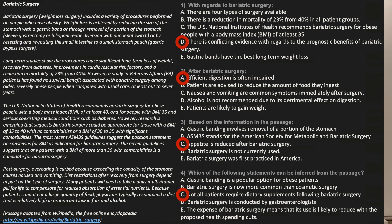For question 1, the correct answer is D: there is conflicting evidence with regards to the prognostic benefits of bariatric surgery. D is supported by the differing findings in paragraph 2. The passage mentions four different types of bariatric surgery but doesn't explicitly say there are only four types, so option A is incorrect. Option B is also incorrect — paragraph 2 states that a study in Veterans Affairs patients found no benefits to bariatric surgery, so it is not a reduction in mortality in all patient groups. At the start of paragraph 3 it says bariatric surgery is currently recommended for patients with a BMI of at least 40, making option C incorrect. Option E is completely unfounded and not in the passage. Therefore the correct answer is D.